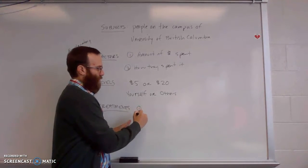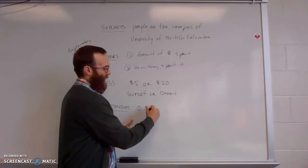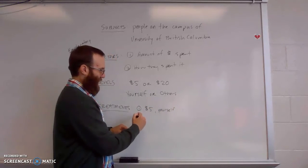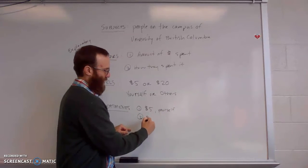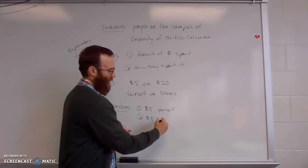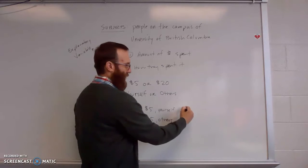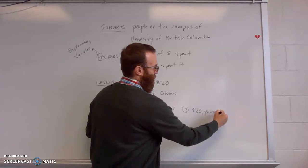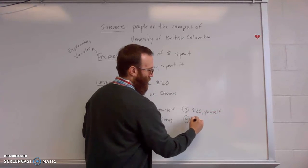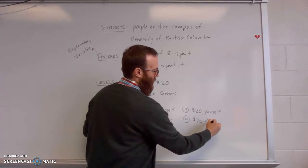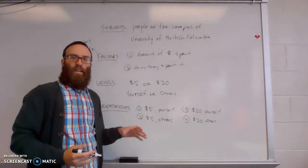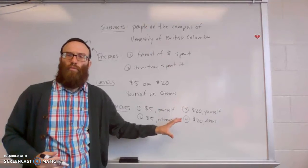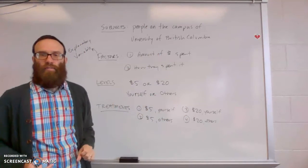So I have one treatment group that is going to spend $5 on yourself. I have one treatment group that is going to spend $5 on others. I have one treatment group that is going to spend $20 on yourself. And that's important to understand when we take these subjects, we've got to split them into four different groups to make sure each group is hitting on a different level of a different factor.